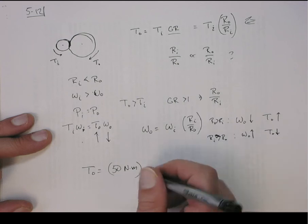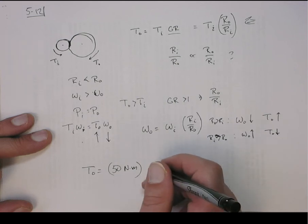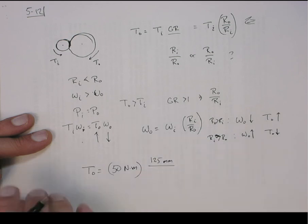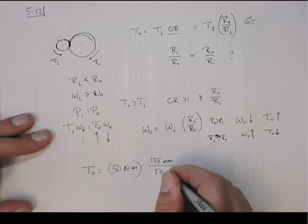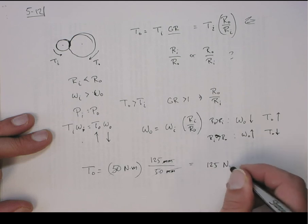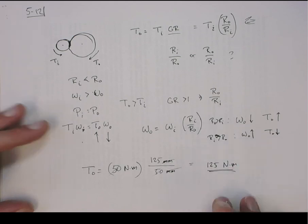So the radius of the outer gear is 125 millimeters. The radius of the inner gear is 50 millimeters. The millimeters cross out, 50 cross out with this, and so we end up just with 125 newton meters. So that's the output torque.